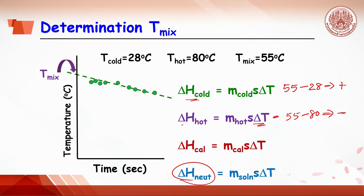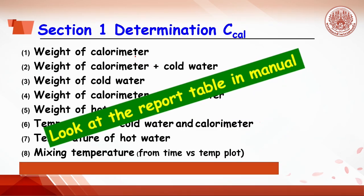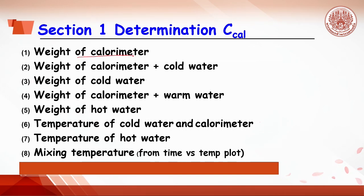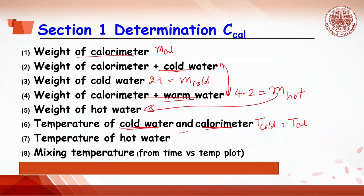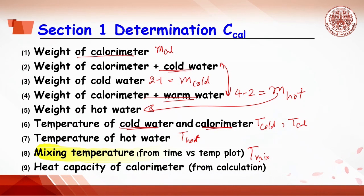Looking at the result table for Section 1: first, the calorimeter set is weighed to get mass of calorimeter. After adding cold water, (weight 2 minus weight 1) gives mass of cold water. Temperature of cold water and calorimeter are also recorded. Then hot water is mixed to get warm water; subtracting weight 4 and weight 2 gives mass of hot water. Temperature of hot water is also recorded. The temperature of warm water is obtained from curve plotting as T mix. Then heat capacity of the calorimeter can be calculated.